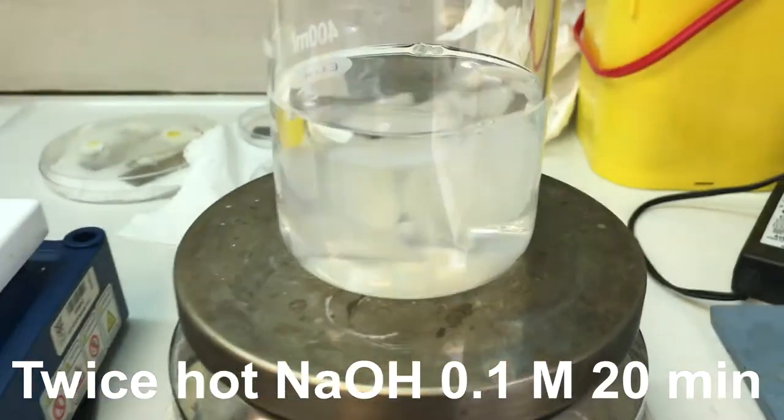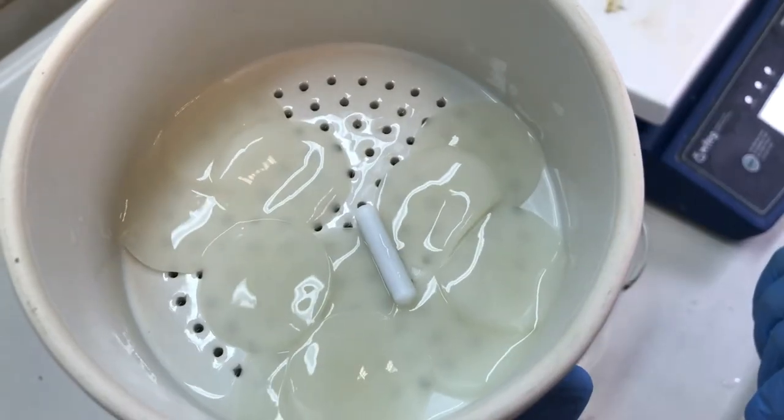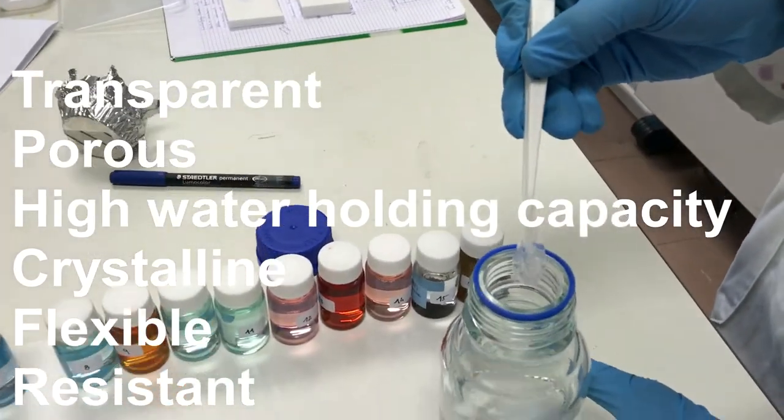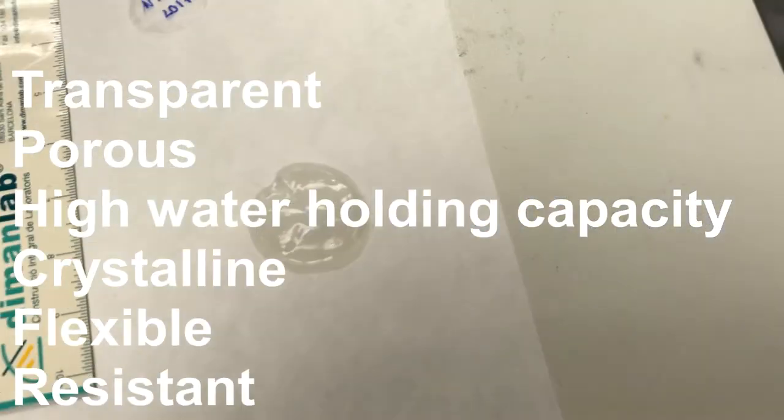After this process, we obtain a transparent wet cellulose membrane which has very interesting properties and can be used in many different applications. An ultrafine porous network with a high water holding capacity, crystalline,